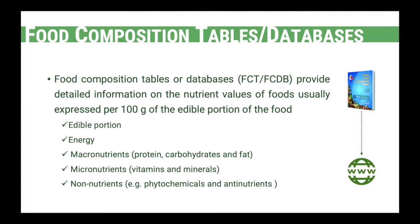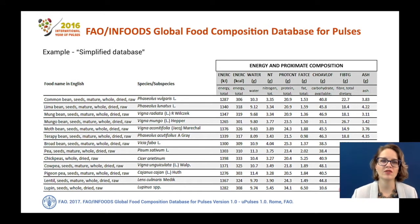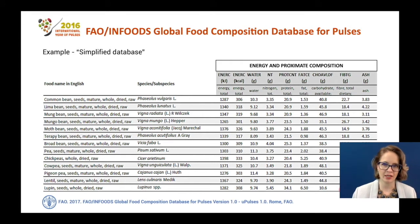In the past, most food composition tables were available in printed books, but since quite some time they are also available on the internet and we can access them in many different formats. Here I'm bringing an example of a food composition database — the FAO infoods global food composition database for pulses, and this is the simplified database.